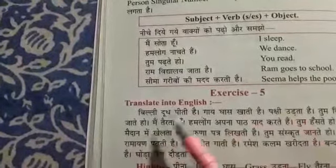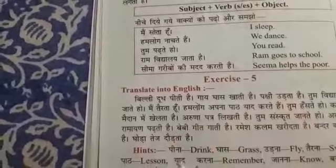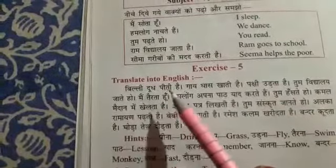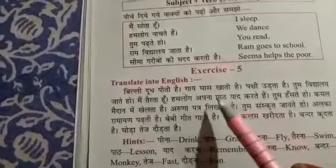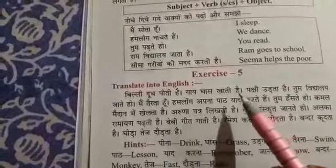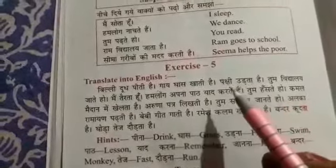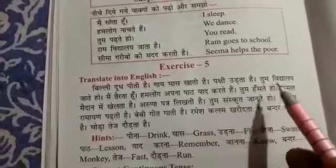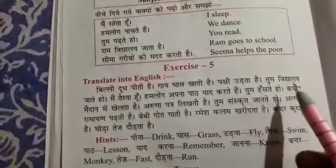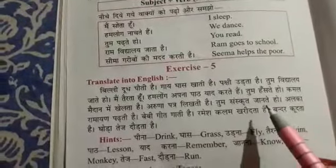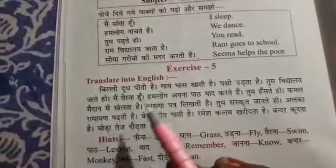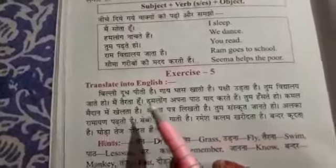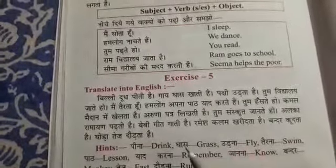Exercise 5. बिल्ली दूध पीती है — Cats drinks milk. गाय घास खाती है — Cow eats grass. पक्षी उड़ता है — Bird flies. तुम विद्यालय जाते हो — You go to school. मैं तैरता हूँ — I swim. S नहीं लगेगा, I swim. इसी तरह सभी को बनाओगे।